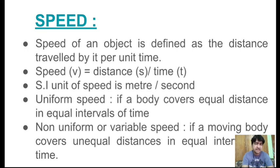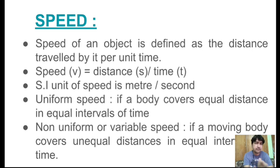So, what is speed? The speed of an object is defined as the distance travelled by it per unit time. The speed is measured as how many meters of distance are covered in 1 second. If it is 10 meters of distance, it is 10 meters per second — the distance travelled by the body in unit time. In 1 hour, how many kilometers run? 40 kilometers means 40 kilometers per hour.